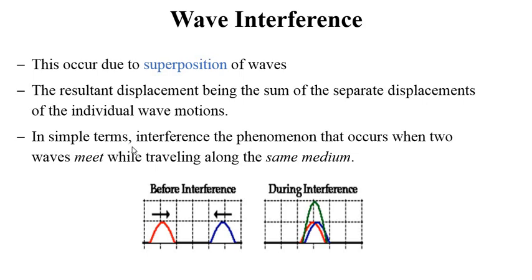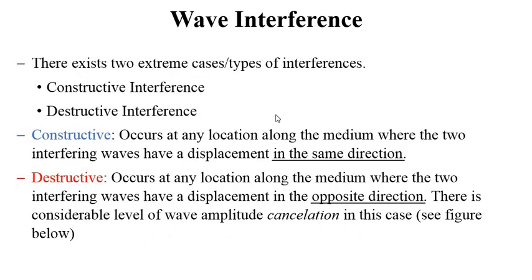In simple terms, interference is the phenomenon that occurs when two waves meet while travelling along the same medium. That is basically trying to describe this in simple approach. There exist two extreme cases of this interference. We have constructive interference and we have destructive interference.